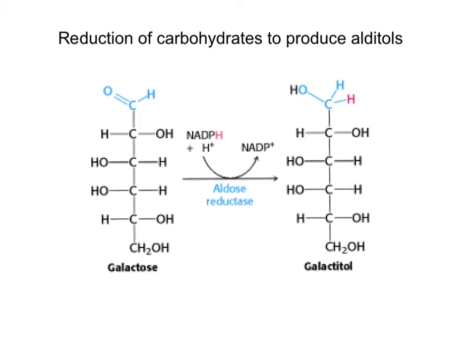This is a reduction of the aldehyde to an alcohol. In similar fashion, glucoses found in berries and fruits are also reduced to glucitol, which is naturally sweeter than glucose.